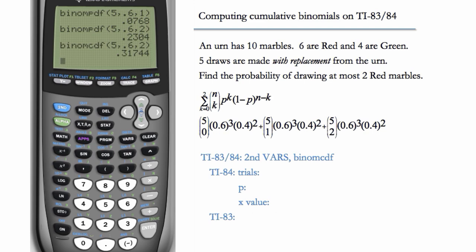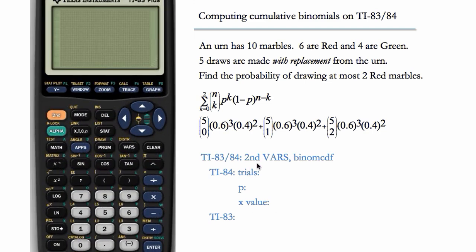Now on the TI-83, we'll still do second vars binomcdf. But as with last time, binomcdf, we have to enter our parameters n, p, and k, where k stands for the biggest k, manually.